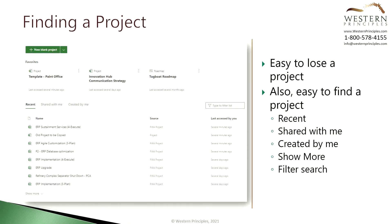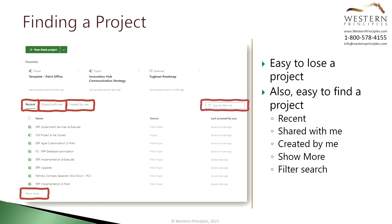If you're working with a lot of projects it can be easy to lose one. From the project home there are several ways to find projects. You can look at the list of your recently opened projects, or the list of projects that have been shared with you, or the list of projects that you've created. If none of these work for you, you might need to expand the list using Show More at the bottom of the list, or try typing the name of the project in the filter list.